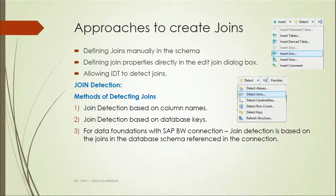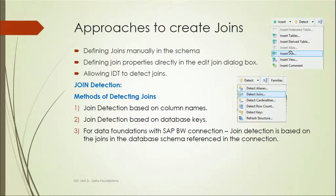There are two approaches to create joins in Information Design Tool: automatic and manual. In the automatic method, after inserting tables into the data foundation, clicking the 'Detect' option will automatically detect joins based on column names or database keys. In the manual method, using the 'Insert Join' option will display the tables listed, and we can create joins based on the tables selected.